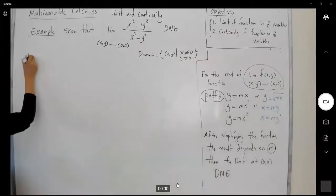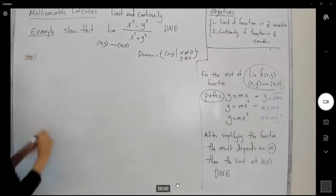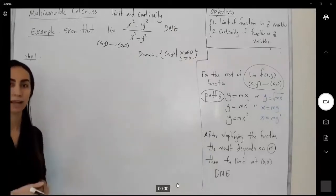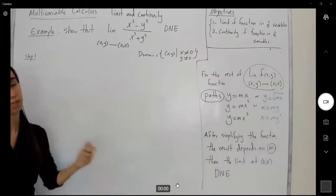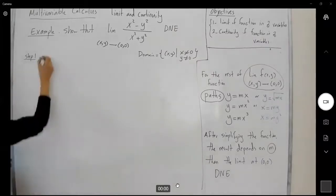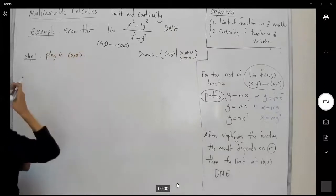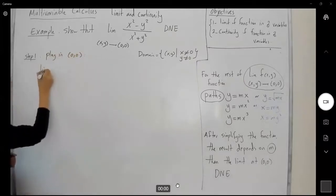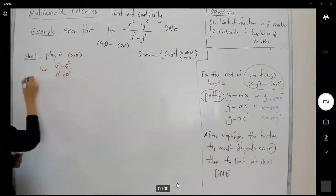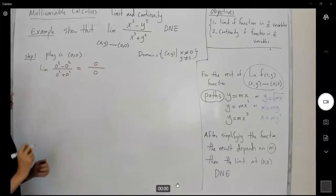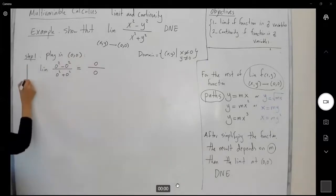In step one, always try to plug in the value. If you get L or a constant as your z value, the limit is L. Plug in (0,0). What do we get? We get the limit of zero squared minus zero squared over zero squared plus zero squared, which is equal to zero divided by zero. This is indeterminate form, so we have to move on to the next step.